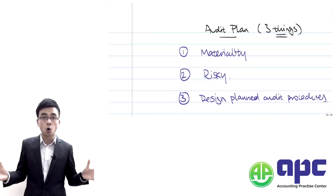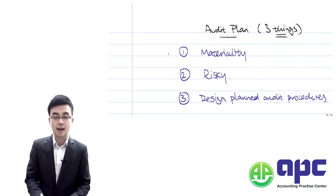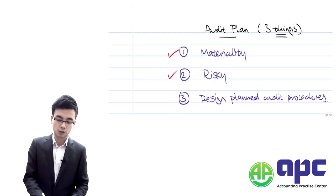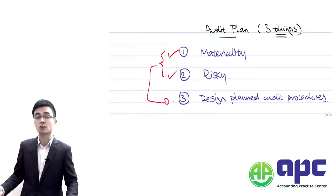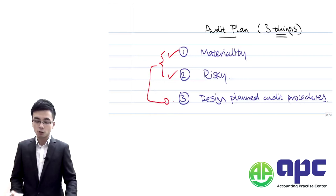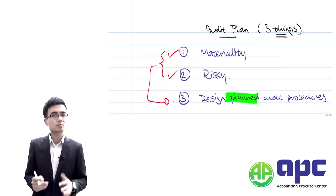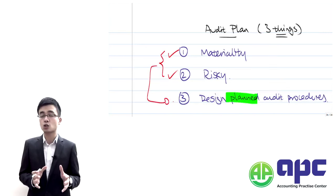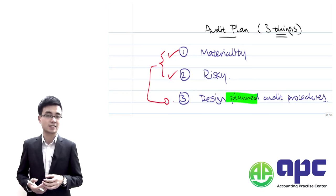We're not checking all of them — we only care about those important and risky areas. For those important and risky areas, we're going to develop procedures to be used by the auditor to check them. These are the planned audit procedures to be used in stage number four when we are doing the substantive testing.